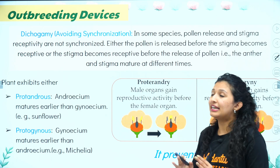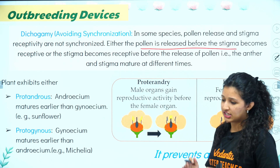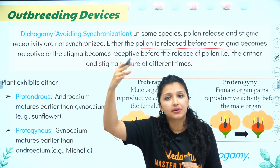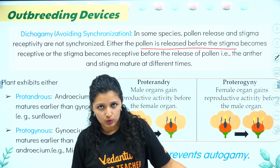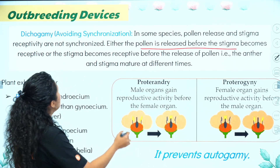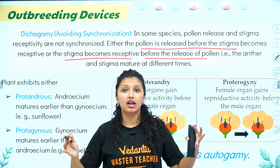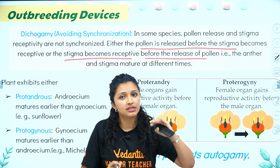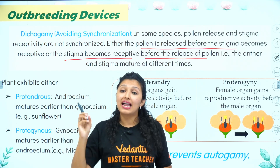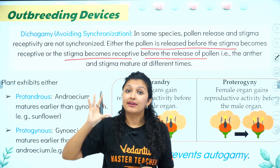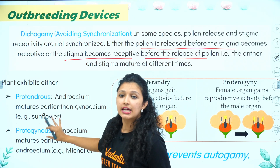Either the pollen is released before the stigma becomes receptive, or the stigma becomes receptive before the pollen is released. So the two are not matured at the same time. That gives us two types: Protandrous and Protogynous.